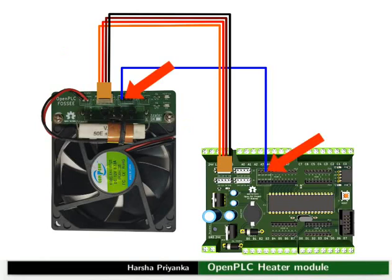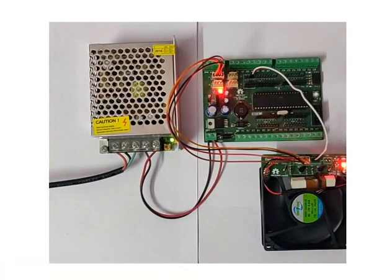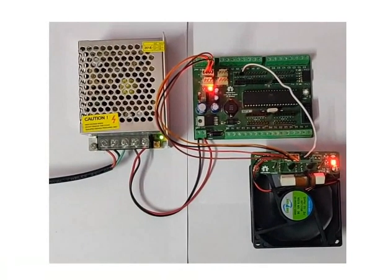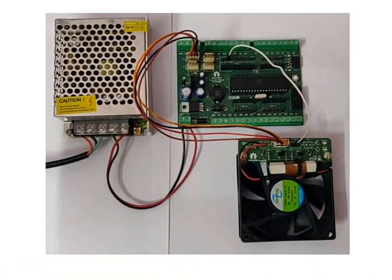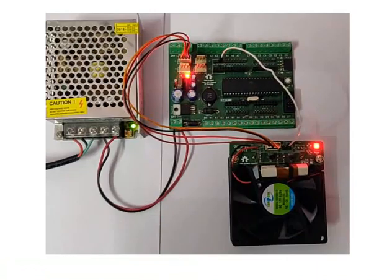Connect plus 5V to the fan pin. We can observe that the fan starts rotating and the fan on LED starts glowing. Remove the 5V connected to the fan MCU pin and connect it to the heat pin instead. We can observe that the heat on LED starts glowing, indicating that the resistor is turned on and the temperature is rising. If you have a multimeter, use it to measure the resistance from time to time.